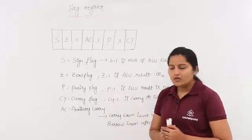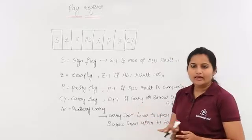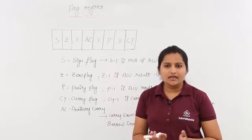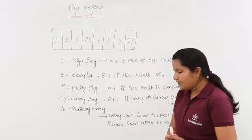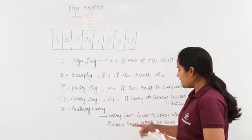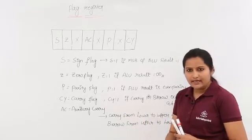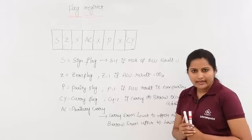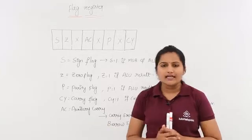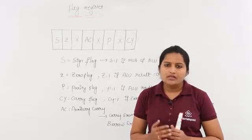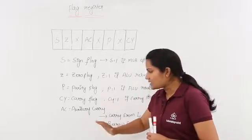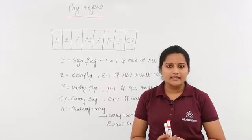Coming to carry flag: whenever a carry or borrow occurs in addition or subtraction, then your carry flag will be activated and gives 1. Coming to auxiliary carry: when auxiliary carry is equal to 1, it means if carry from lower to upper nibble, or borrow from upper to lower nibble, is produced, then you get auxiliary carry equal to 1. This auxiliary carry cannot be accessed by the programmer — it is only used internally by the computer for BCD addition purposes.